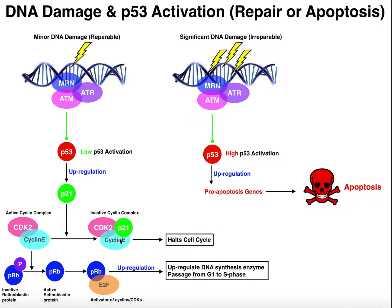While CDK2/cyclin E is inactive, you get no progression into the S phase, because these two proteins were responsible for activating retinoblastoma protein and then progression into the S phase. So the way that minor DNA damage accomplishes this halt of the cell cycle is by triggering upregulation of p21, which turns off the CDK2/cyclin E complex, and therefore you halt the cell cycle. If the DNA truly is reparable, once the DNA is repaired, p21 goes away and you revert this complex back to its active form. Then this complex will remove the phosphate from retinoblastoma protein, and you'll get progression into the S phase — but only once the DNA is repaired.